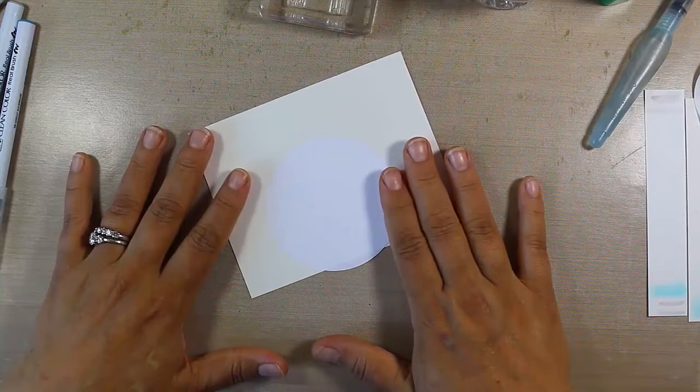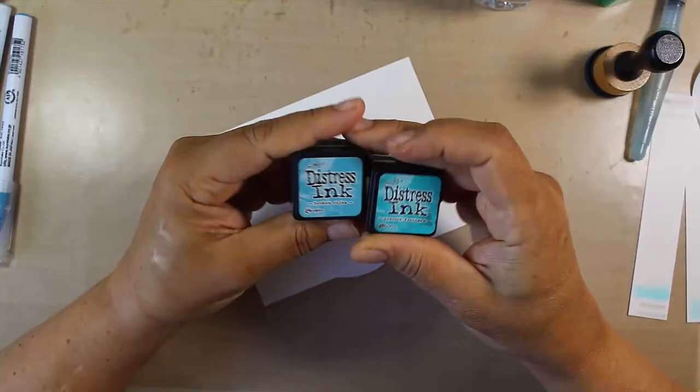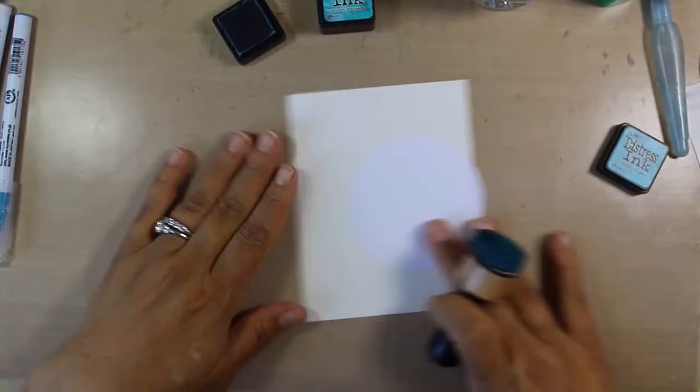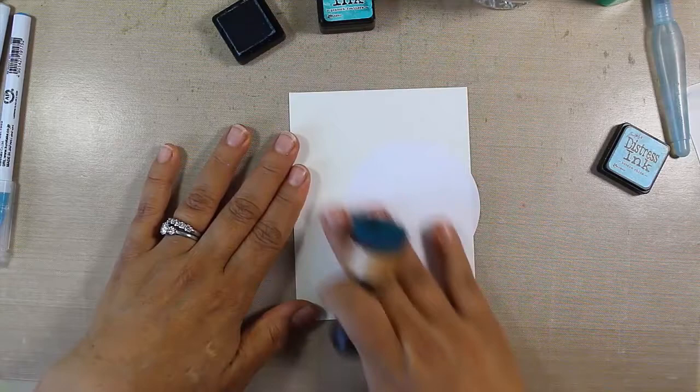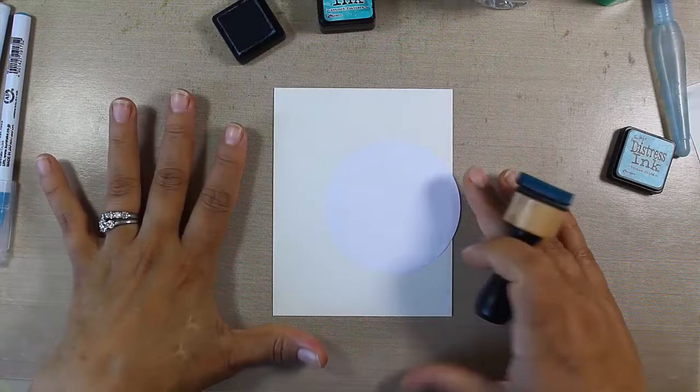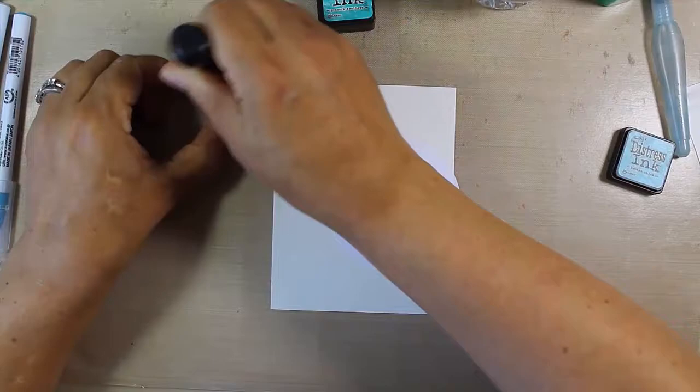First things first, we're going to do a little bit of distressing with some distress inks. I have Broken China and Peacock Feathers. I'm going to start with my lighter shade and keep it a little bit darker towards the bottom, lighter as it goes outward up top, almost like a little window.